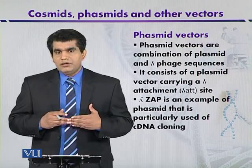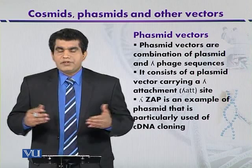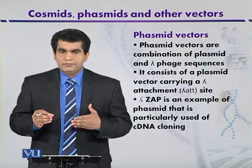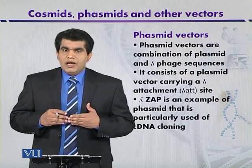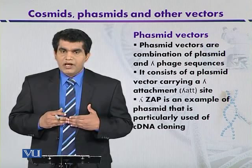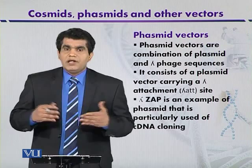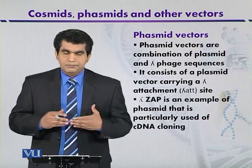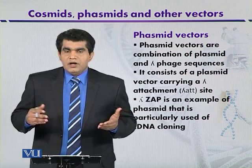Phasmids have certain advantages over other cloning vectors. An example is the lambda ZAP vector. Lambda ZAP can be used for the cloning of cDNA. It is a type of insertional vector where foreign DNA can be inserted after treatment with an appropriate restriction enzyme, after which the foreign DNA fragment can be cloned into it.